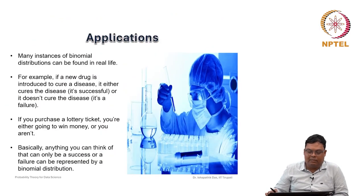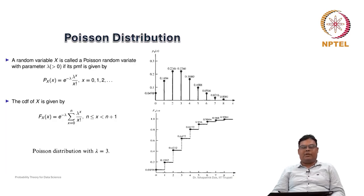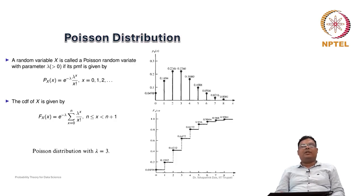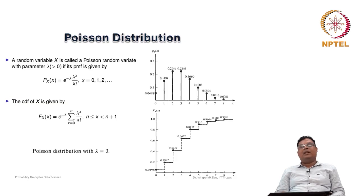I hope you have understood this concept of binomial distribution — how you can use it to solve numerical problems. Now we will discuss Poisson distribution, another important distribution. We completed Bernoulli and binomial distributions. For Bernoulli the range is 0 or 1, and for binomial it is 0 to n — finite numbers. We will now discuss another distribution that is also discrete but can have a countably infinite range.